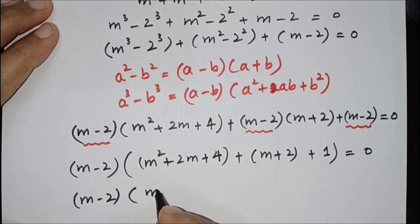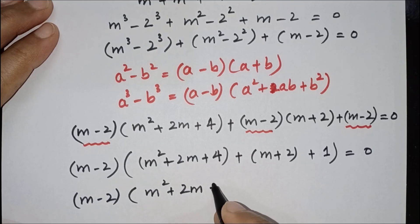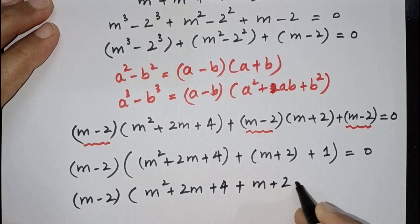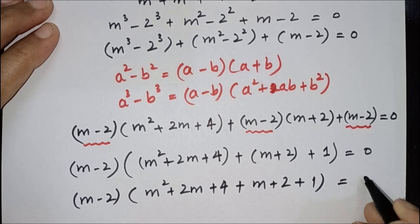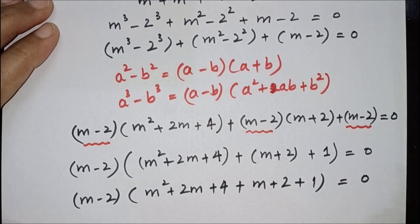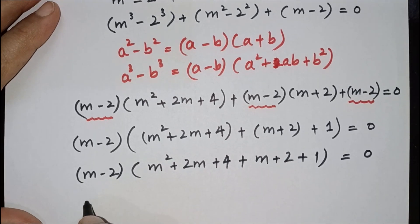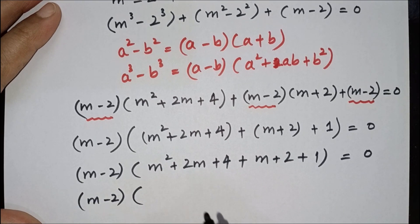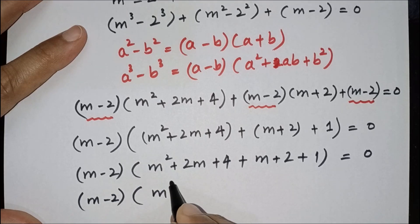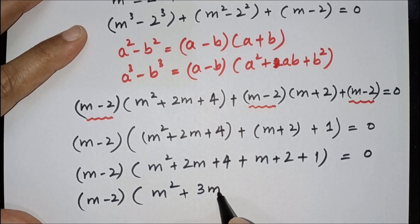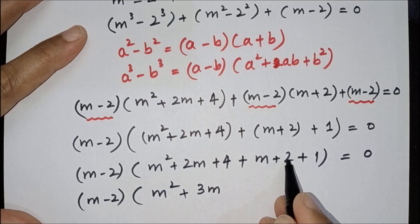Taking (m minus 2) common, inside the parentheses we have m squared plus 2m plus 4 plus m plus 2 plus 1. Combining like terms: m squared plus 3m plus 7, giving us (m minus 2)(m squared plus 3m plus 7) is equal to 0.